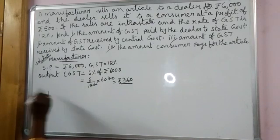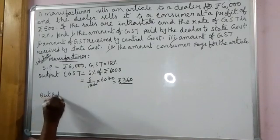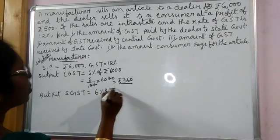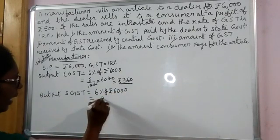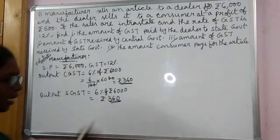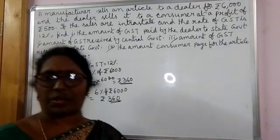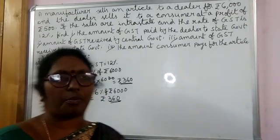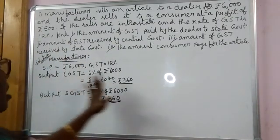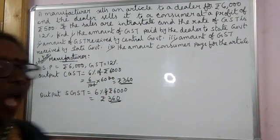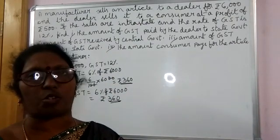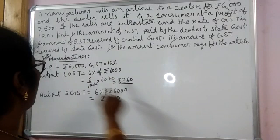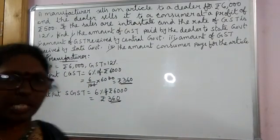Similarly, his output SGST is also 6 percent of 6000 rupees, which is 360 rupees. Since sales are intrastate, 50 percent goes to the state government and 50 percent goes to the central government. So the manufacturer pays 360 rupees to the central government and 360 rupees to the state government.